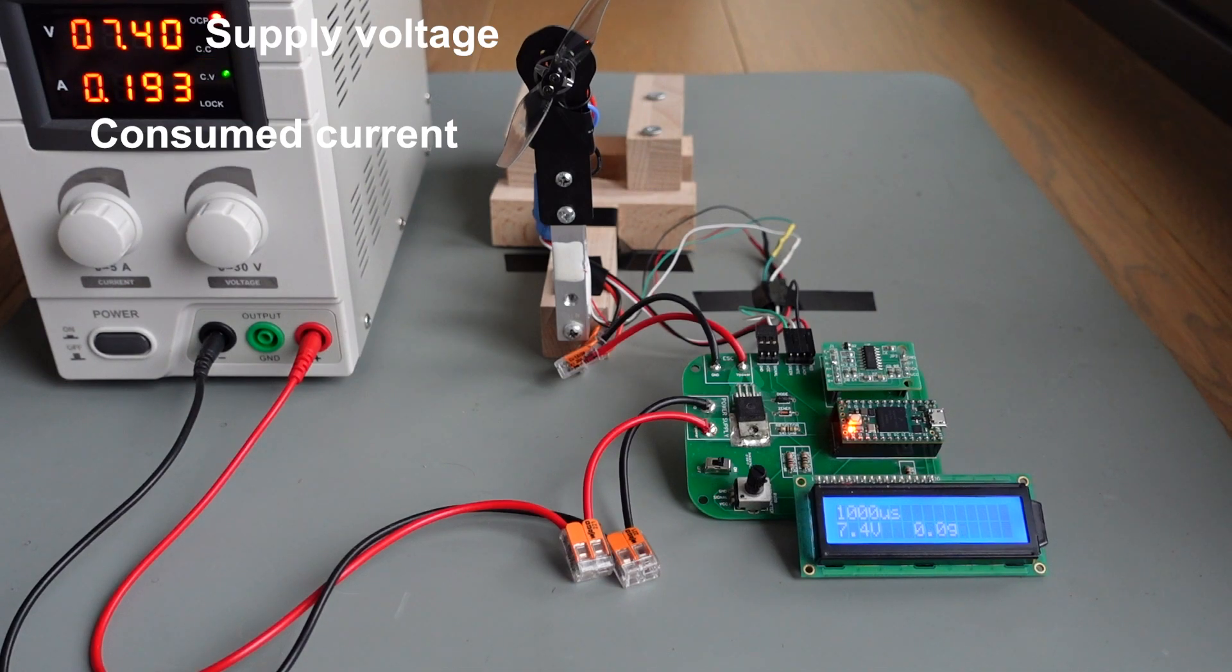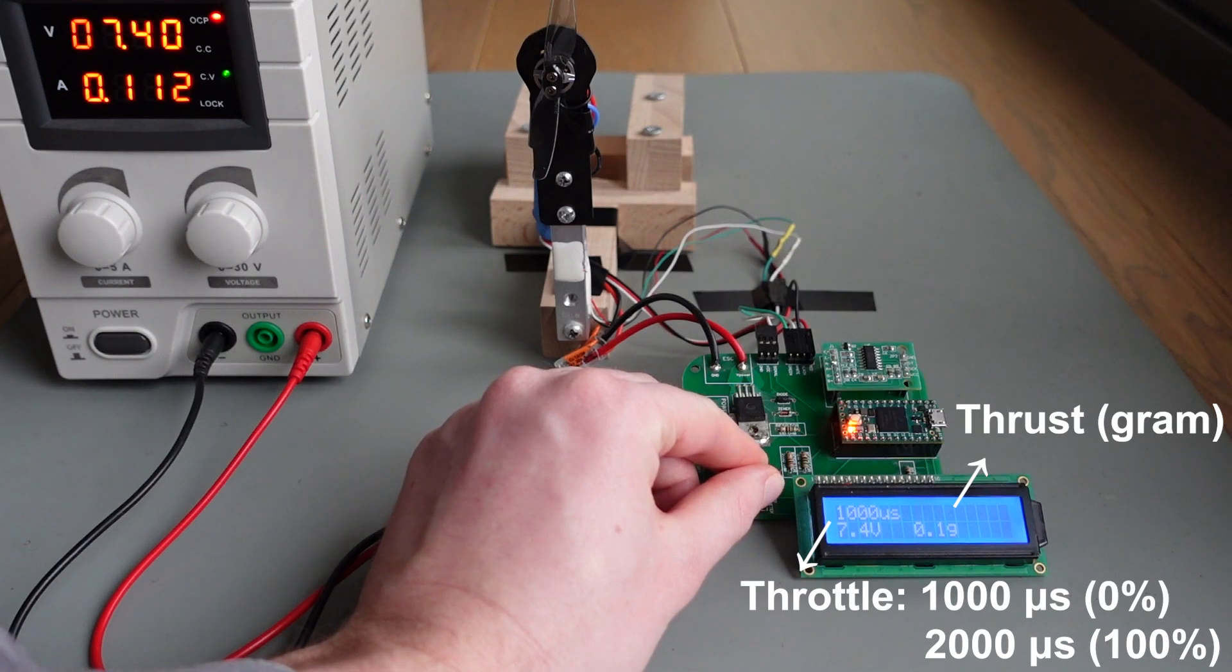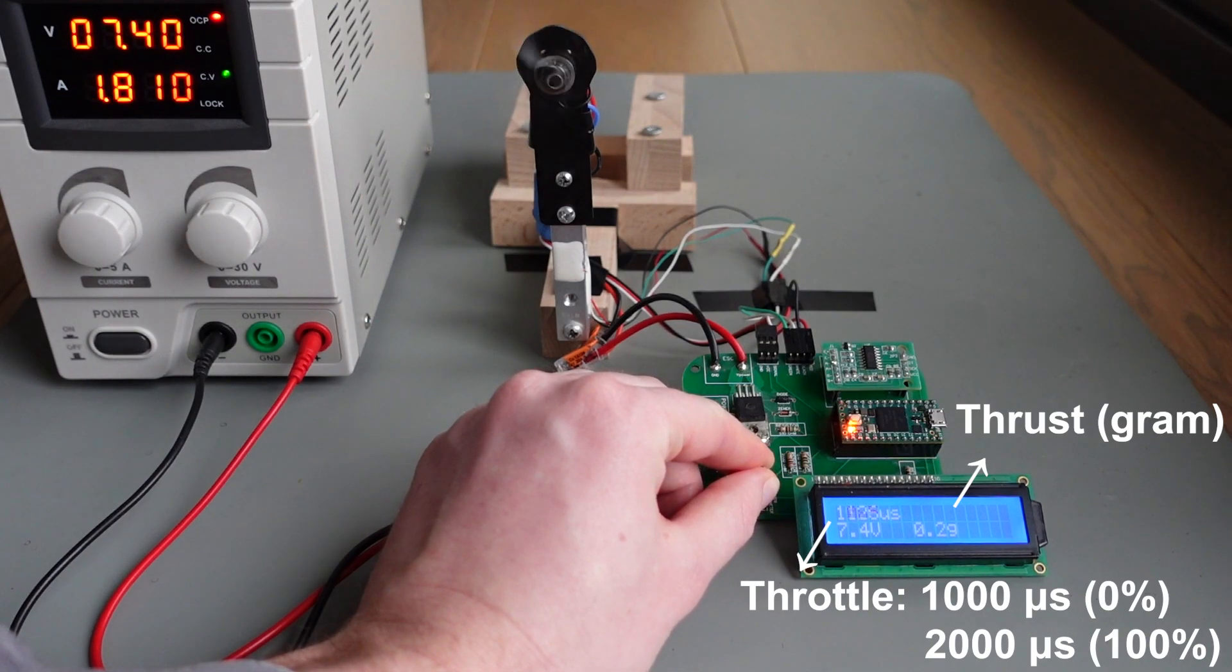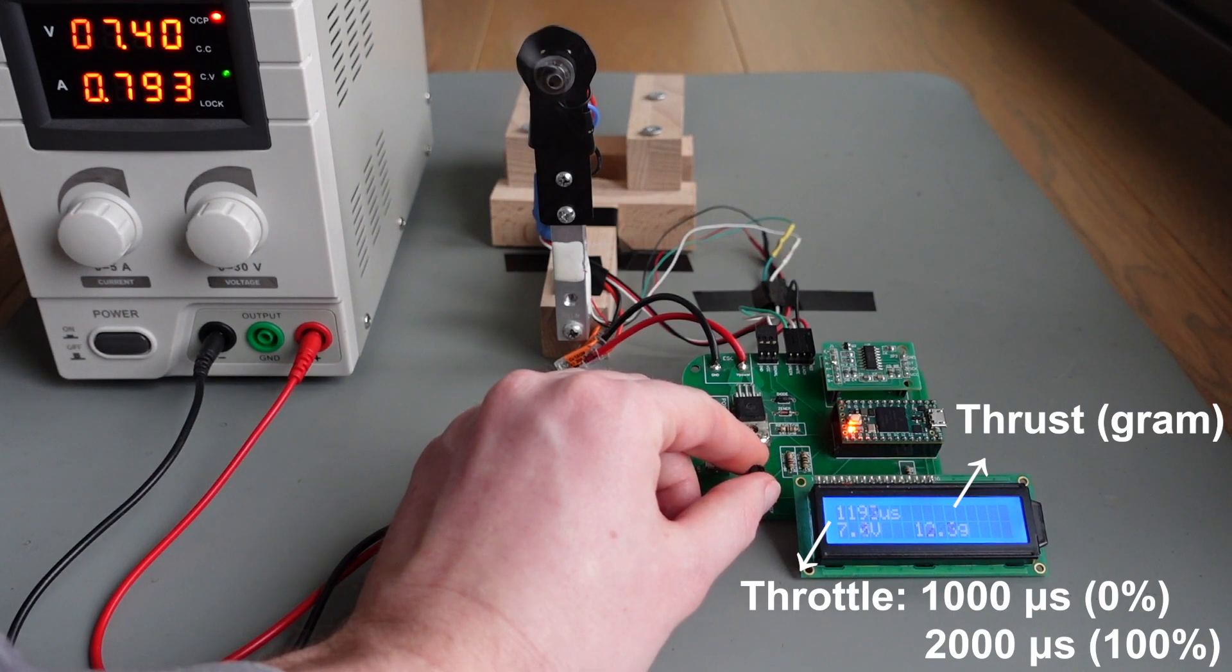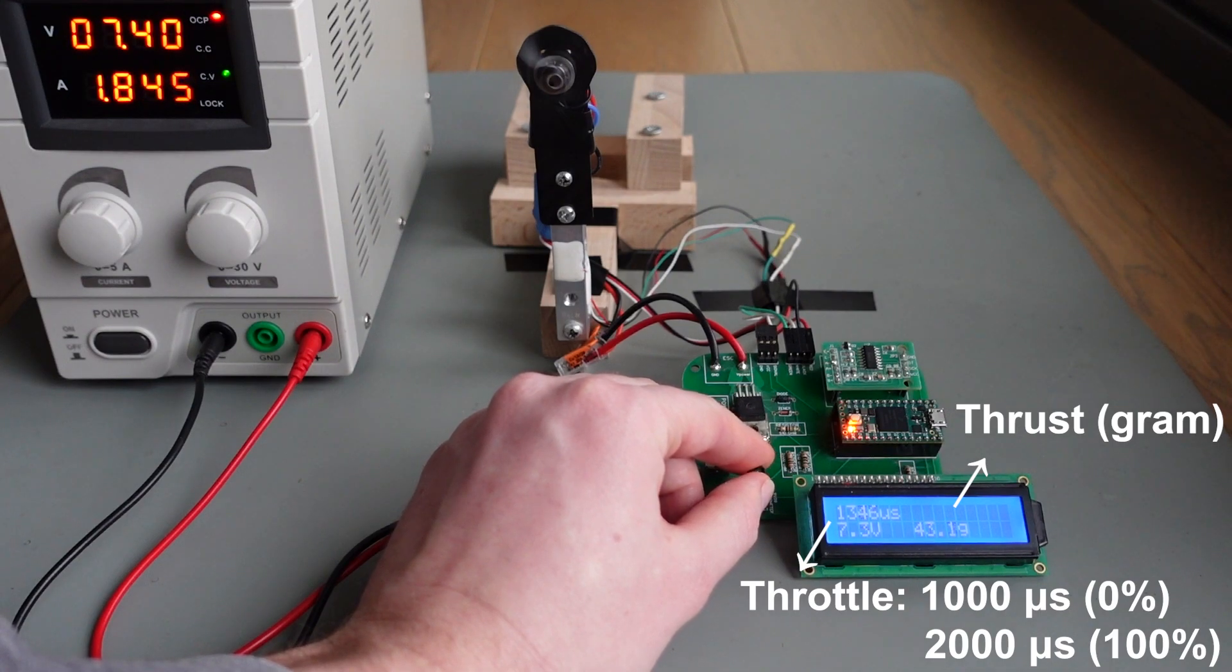Let's start the motor and softly increase the throttle by turning the control knob. The throttle is visualized on the LCD display together with the thrust, which will increase with the pulling force of the motor. We will now try to increase the motor throttle to around 1400 microseconds, or 40%. At this point we will read the consumed current and the thrust.